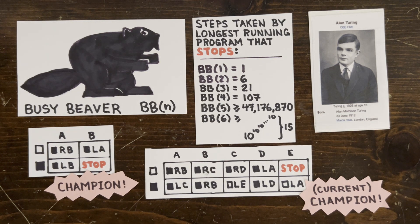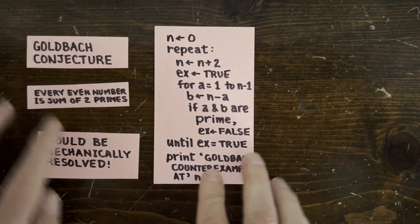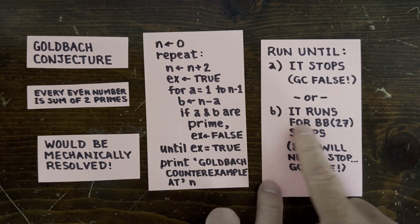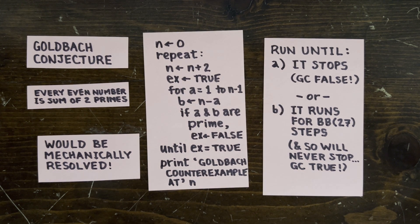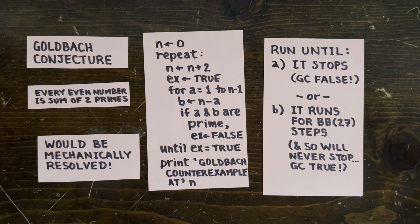Busy beavers are important for meta-mathematics, so there's a 27-state machine that halts on any exception to the Goldbach conjecture. If that machine runs past BB(27) steps, then it's going to run forever, by definition. So you'd think that the Goldbach conjecture would require checking an infinite amount of even numbers, but in fact, the conjecture can be resolved by checking a very large but finite set of even numbers.